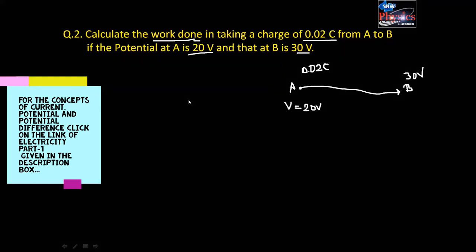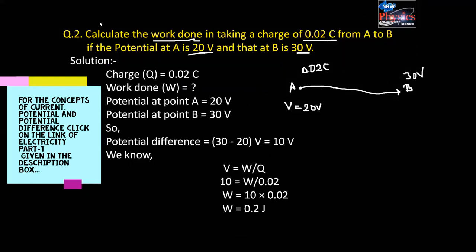Let us see the solution. Charge is 0.02 coulomb. Potential at point A is 20 volt and potential at point B is 30 volt. Now we will calculate the potential difference: 30 minus 20 will be 10 volt. So the potential difference is 10 volt.